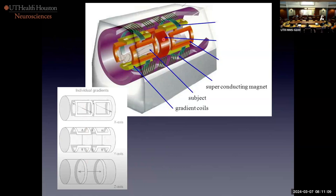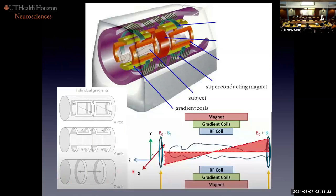Gradient performance determines how fast you can image and what the highest resolution you can get is. Let's focus on the Z-axis coil. If I run current through this coil, by the right-hand rule it will increase the main magnetic field at one end, and running current in the opposite direction at the other end subtracts from the main field, creating a gradient of magnetic field strength. From the Larmor equation, frequency is directly related to field strength. So when I turn on the Z-axis coil, the protons in your toes will be precessing at a slightly greater frequency than those in your nose.